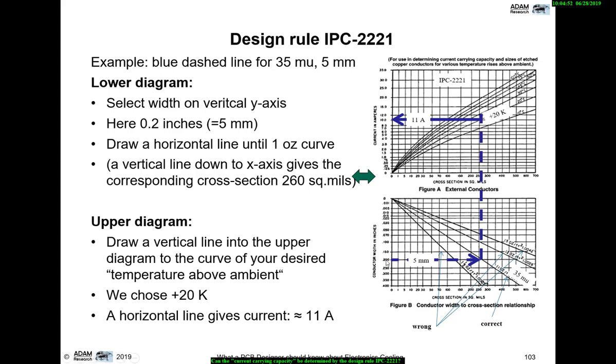Just an application. If we want to know the maximum current so that a given trace does not exceed 20K above ambient, we look for the width of the trace, for example 0.2 inches, which is around 5 millimeters. Then we go to a line representing the thickness of the trace, say one ounce or 35 microns. We move up to the 20 degree K or C line and read on this axis the typical current, which is 10 or 11 amps. That's quite easy.